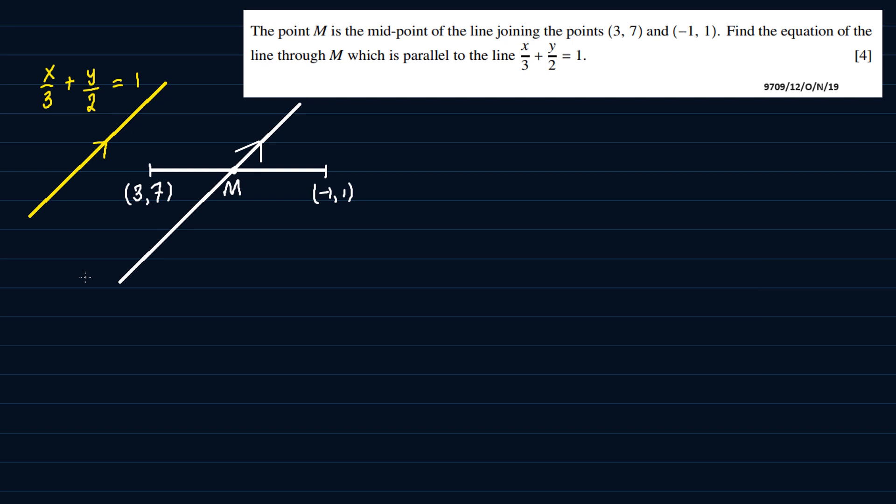Now since these two lines are parallel, the first thing I'll have to do is find the gradient of the two lines. So I'll use the equation x/3 + y/2 = 1 to find the gradient. Remember, the gradient of parallel lines should be equal.